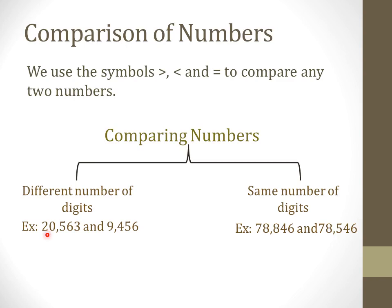The first example is 20,563 and 9,456. You have given these two numbers to compare. After looking at these two numbers, you can see that the first number has five digits and the second number has four digits. This is the first case in which you will find a different number of digits. The second example is 78,846 and 78,546 — both these numbers have five digits, meaning they have the same number of digits.